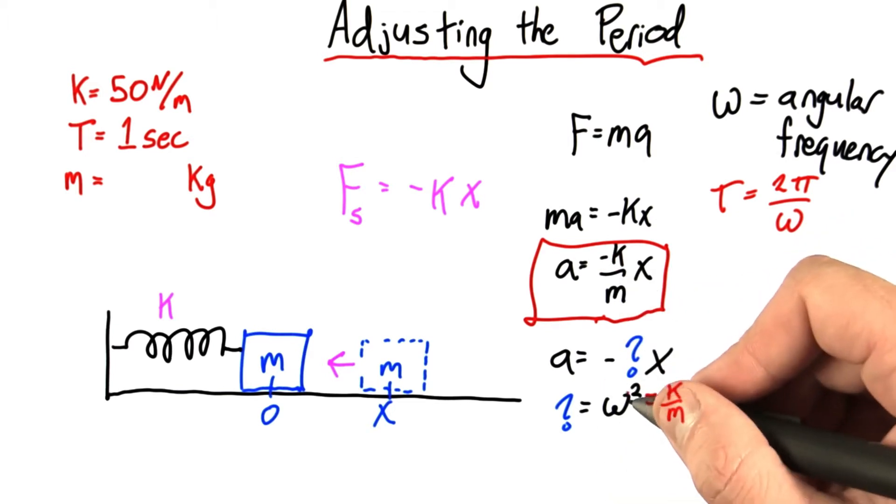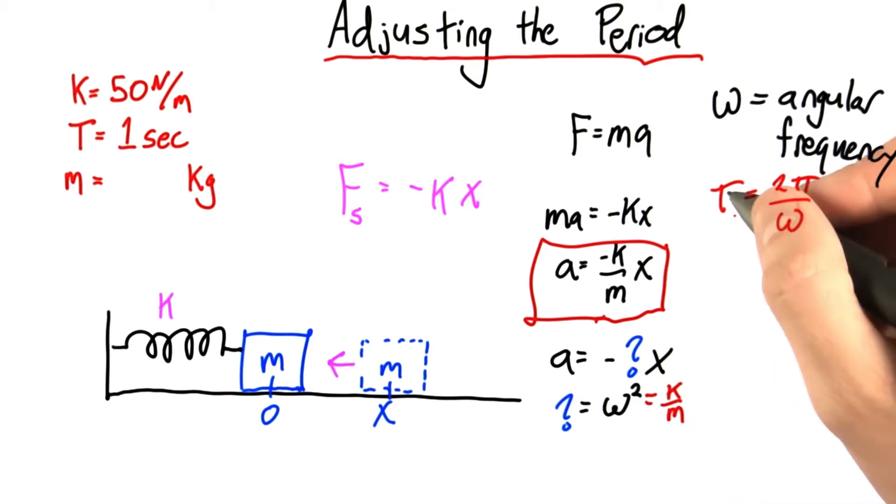So if I know k and I know omega, I can get m. But I don't know omega, I know period. So why don't I get omega from that period? Well, in this case, the period is one second, so omega is just 2π.